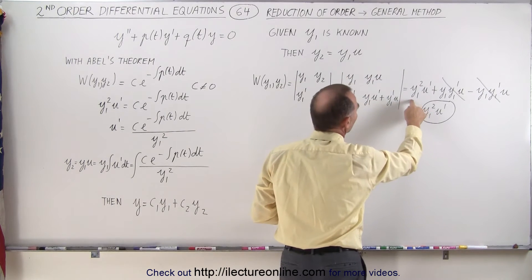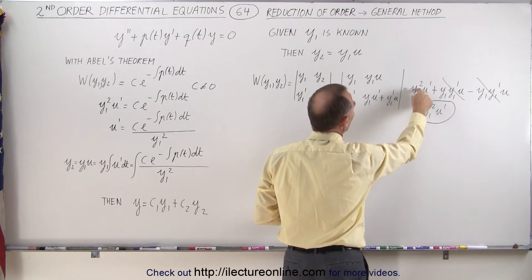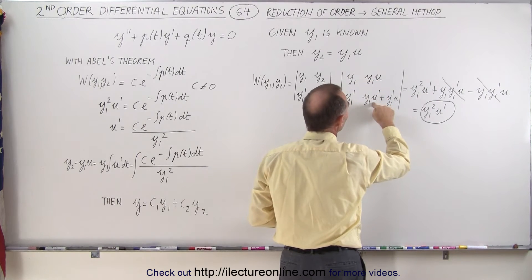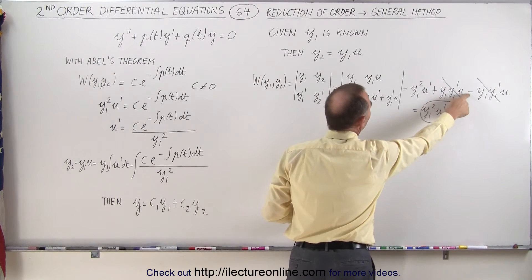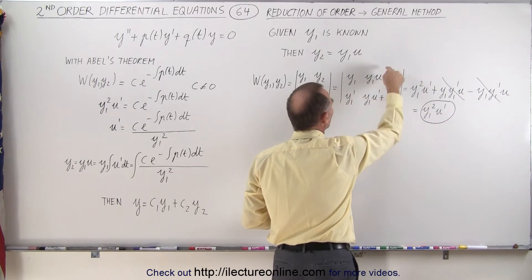So we have y1 squared times u prime, when we multiply this times this, and then multiply this times this, we get this term right there, minus when we multiply these two terms.